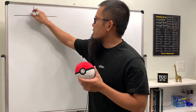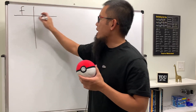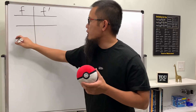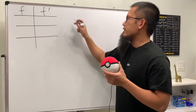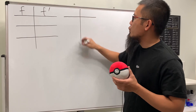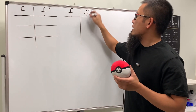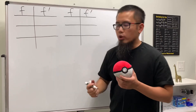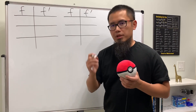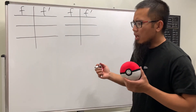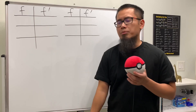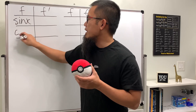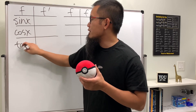First, I'm going to put down the derivatives in a table like this — we have f and f'. I'm going to give you guys 3 first, and then another table with the other 3. Keep in mind the order of the functions, because if you put them down in this order, the pattern is easier to remember. So I'll start with sine x, then cosine x, then tangent x.